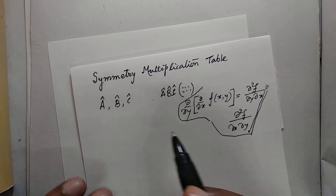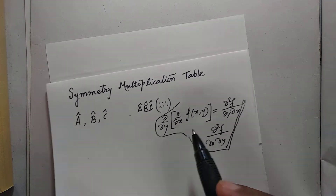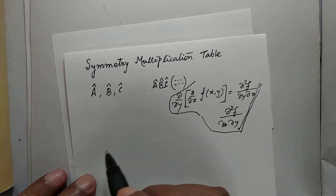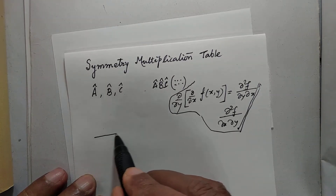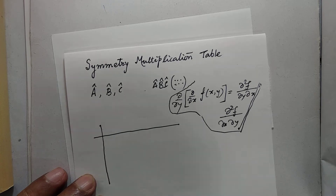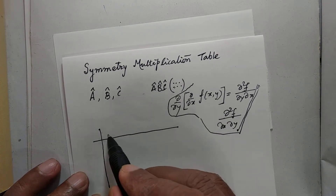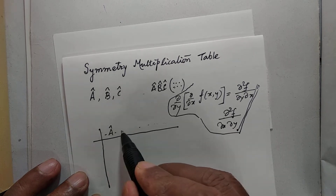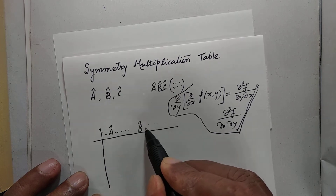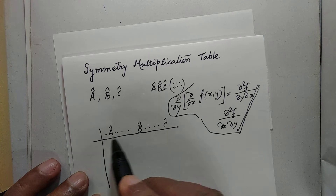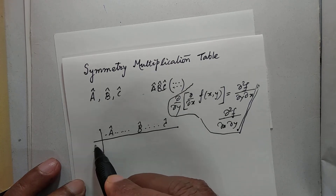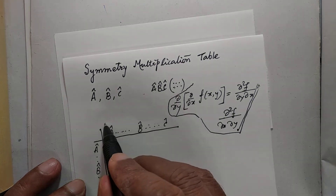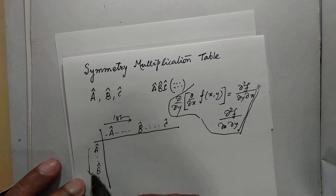Now we will discuss the symmetry multiplication table with the help of an example. But before that, let me discuss the common structure of a multiplication table. Suppose your operators are written along a row: A, B, C — and also along a column. Consider those in the row as the first operations and those in the column as the second.